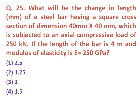Question twenty-four: What will be the change in length in mm of a steel bar with a square cross section of 40 mm × 40 mm, subjected to an axial compressive load of 250 kN, if the bar length is 4 m and modulus of elasticity E = 250 GPa? Using the formula delta = PL/AE, the answer is 2.5 mm.